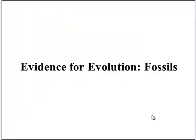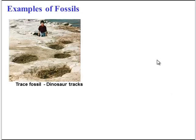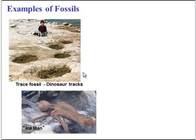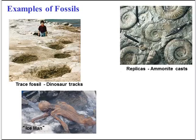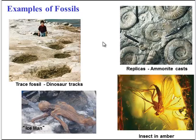Now let's take a look at the evidence used to build these phylogenetic trees. The first type of evidence is fossils, and there are many types of fossils: dinosaur tracks, an actual fossilized human preserved in ice, replicas or prints left by organisms, and organisms preserved in amber. Fossils are great because you can date them.